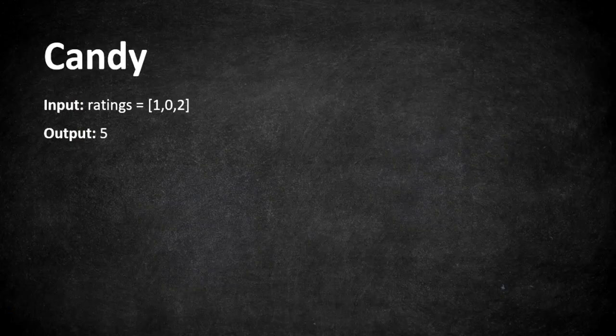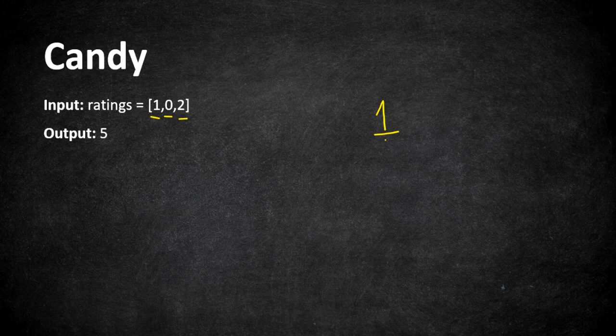Here is a given example: the rating array has three values, which means there are three children with ratings 0, 1, and 2. Everybody must have at least one candy. The lower-rated child is 0, which is in the middle, so we give one candy to that child. The neighbors have ratings 1 and 2, both higher than their neighbor, so they deserve more candies. For the child with rating 1, we give at least one candy plus one extra since its rating is higher than 0.